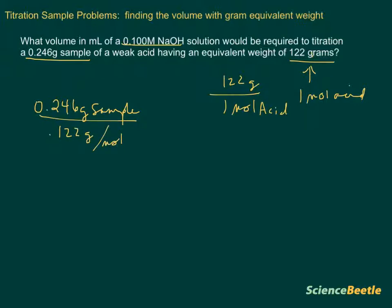We want to divide this by the equivalent weight, which in this particular case is 122 grams per mole of the acid. When we do this, notice that our units of grams are going to cancel, and what that's going to give us are the number of moles. Doing the math will yield 2.016 times 10 to the negative 3 moles of the acid.